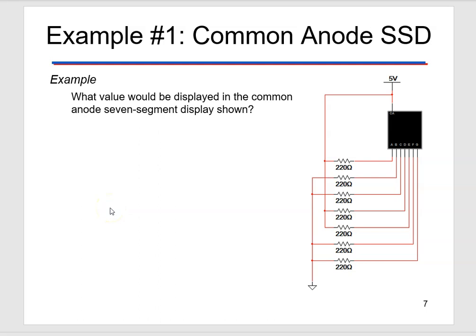That brings us up to this example. So in the example here, it says what value would be displayed in the common anode? And in the common anode, in order for the LEDs inside to be illuminated to turn on, the pin for each of those LEDs would have to connect to ground. So I see ground right here. And if I trace that up, I can see where those ground wires are going. So I can see that I'm going to have a ground at G.